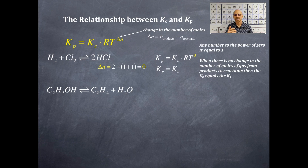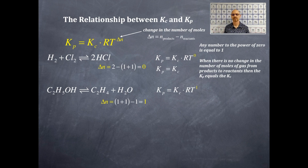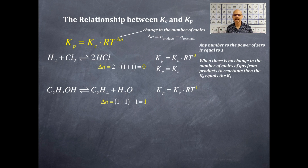Here's another equation with one reactant and two products. The ΔN is moles of products (1 + 1) minus moles of reactants (1) = 1. So KP = KC × RT to the first power. We actually do multiply KC times RT to get KP. Or if we want KC, we take KP divided by RT.